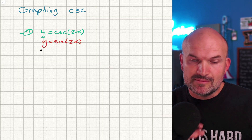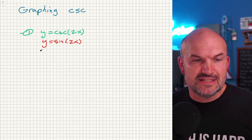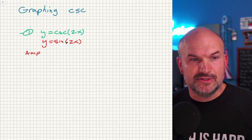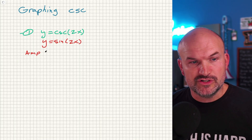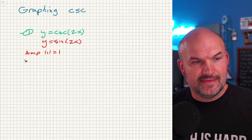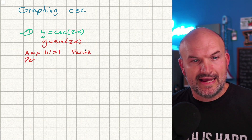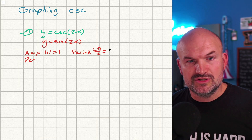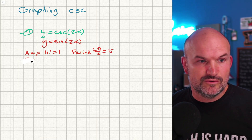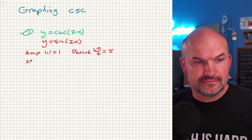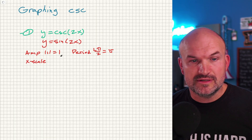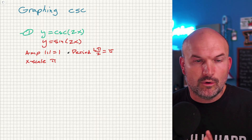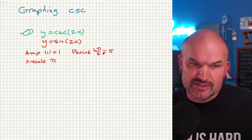If you still need help graphing sine, I'll have some more examples in the description below. But I'll work through everything here a little quicker. The first thing when graphing sine is to identify the amplitude — that's the absolute value of a, the coefficient of your function, which here is the absolute value of one. Then the period is two pi divided by B, where B is the coefficient of x, so it's two pi divided by two, which gives us pi. The x scale is simply the period divided by four, so pi divided by four. There are no other transformations — no vertical or horizontal shifts in this example.